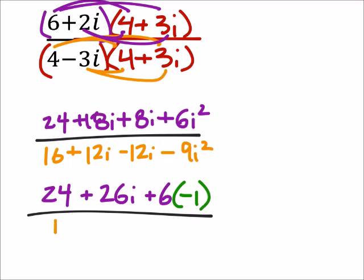And then in the denominator, I have a 16. Again, these two middle terms are going to cancel out. And then I would have minus 9. And then I've got another i squared, so that's a negative 1.